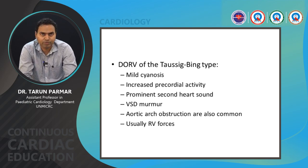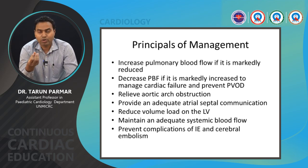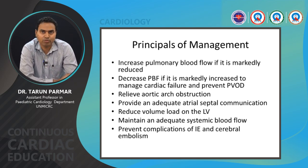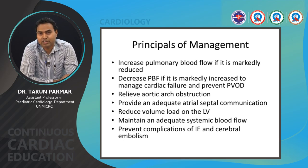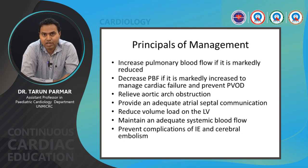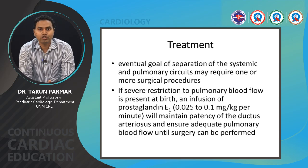The principles of management are: if the patient presents with decreased pulmonary blood flow, provide adequate pulmonary blood flow via PDA stenting or an aortopulmonary shunt. If presenting with increased pulmonary blood flow, perform pulmonary artery banding. In cases of aortic arch anomaly, correct that anomaly. Ensure adequate interatrial communication, reduce volume load on the LV, maintain adequate systemic blood flow, and prevent complications such as infective endocarditis and peripheral cerebral embolism.